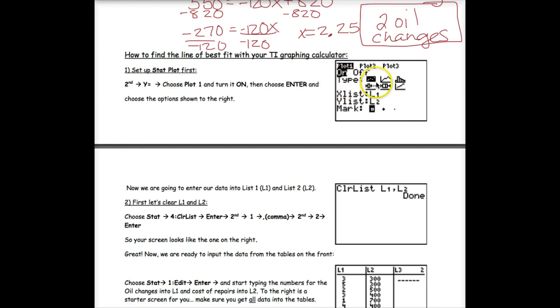First of all, if any of them are on, you want to turn them off. I don't have any of mine on. So if none of them are on, then just go ahead and press enter on plot one. You should see a screen that looks like this. First thing we want to do is turn it on. Press enter when you're on top of the on key. Then we want to make sure our type is the first one here. If it's not, you just move your cursor on top of this and press enter. For your X list, you want it to say list one. Above the one key you see L1 in that color, and above the two key you see L2. To get Y list to say L2, you would press second two. For the mark, you want this first one. Make sure your screen looks exactly like what I have here before you move on.